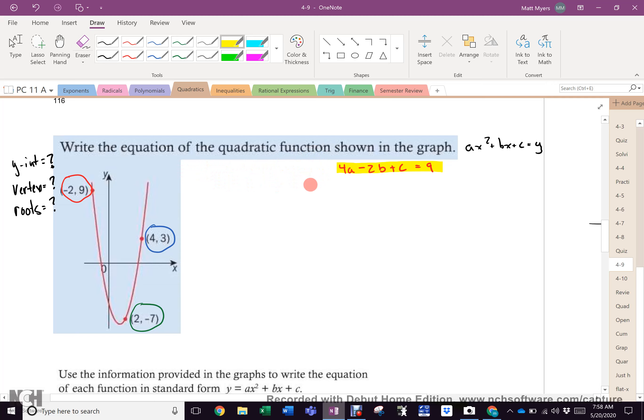And I'm going to bring this red equation right over to here. Now, that covers the red one. Now, this blue one, I got 4 and 3. So, this blue one is going to be 16a, plus 4b plus c is going to equal 3. And lastly, the green one, I'm going to have 4a + 2b + c equals -7. There's my three equations.